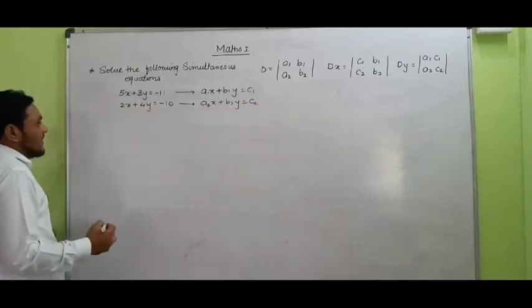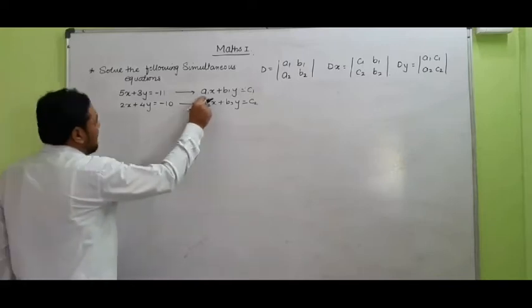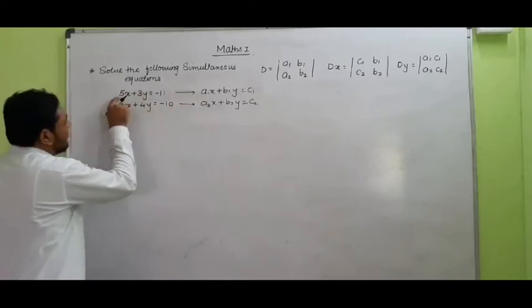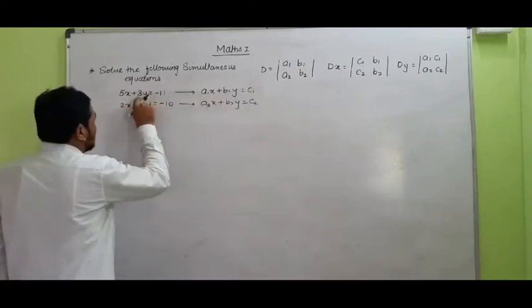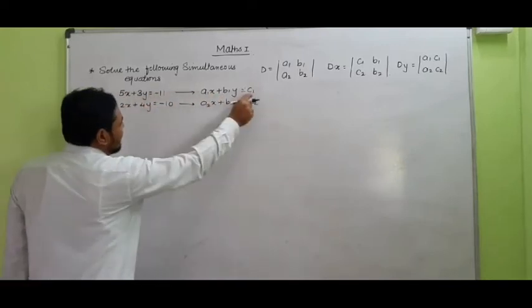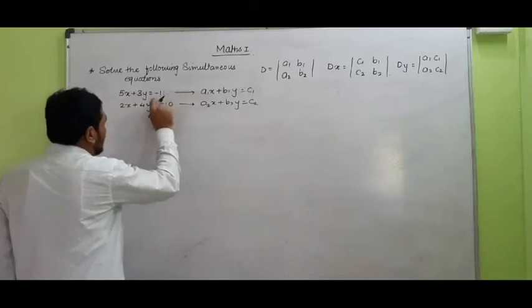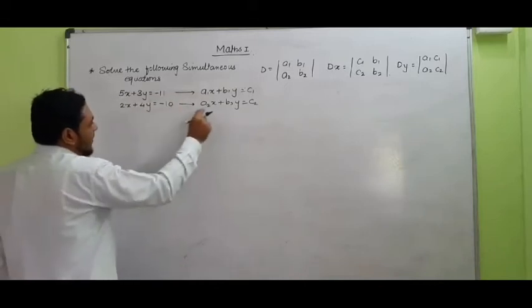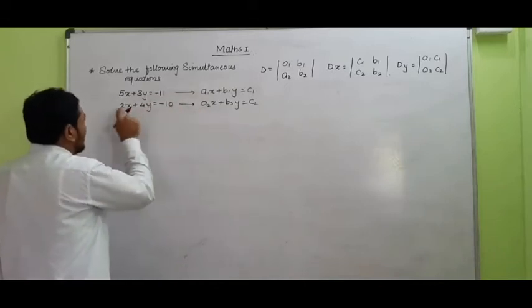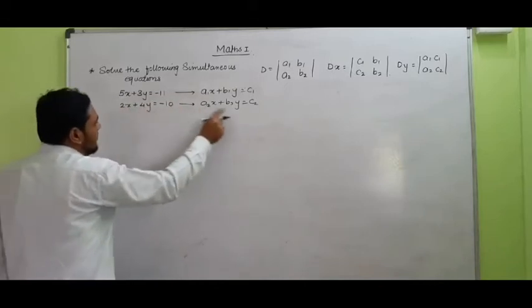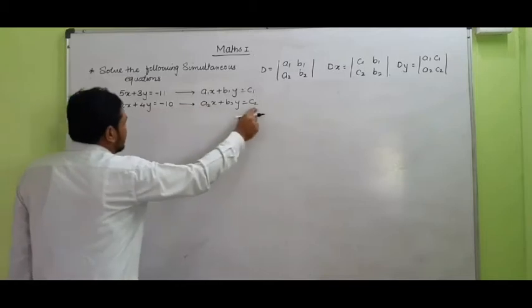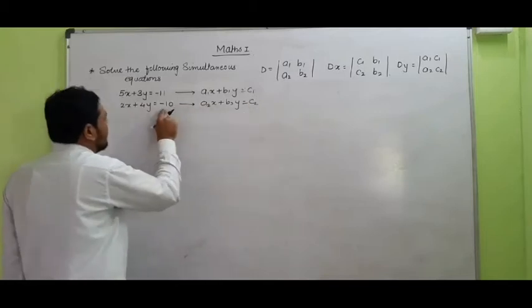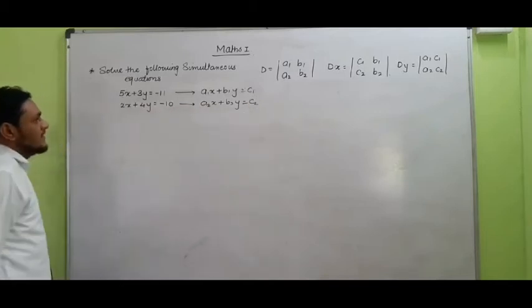So here A1 will be equal to 5, B1 will be equal to 3, and C1 will be equal to minus 11. A2 will be equal to 2, B2 will be equal to 4, and C2 is equal to minus 10.